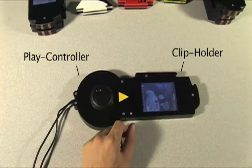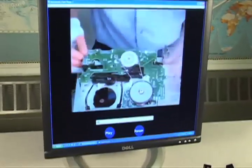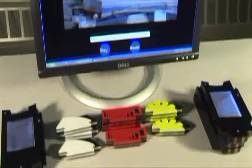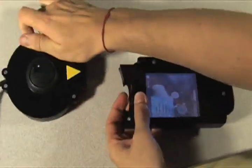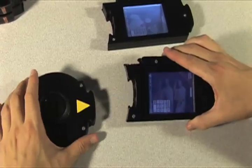Here the user has connected a clip holder to the play controller in order to view a video clip. To view another clip, the user disconnects the first clip holder and selects a different one, connecting it to the play controller.